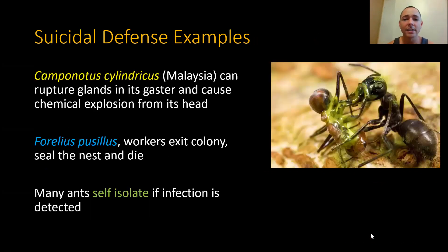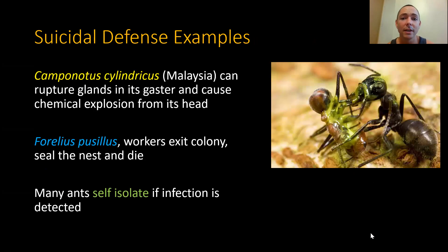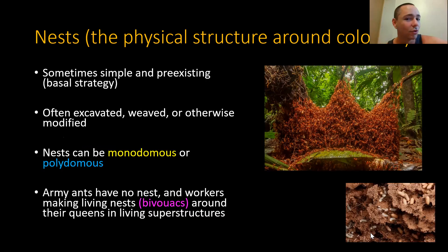We cut off last time talking about suicidal defense mechanisms. Once you have workers that are sterile and spending their whole lives in service to the colony without any hopes of personal reproduction, you get the evolution of suicidal defense mechanisms in these worker castes in some instances — they can forego future reproduction because they had none. This opens the door to elaborate self-destructive defenses that don't normally occur in animals that can reproduce again and again, which are called iteroparous organisms.